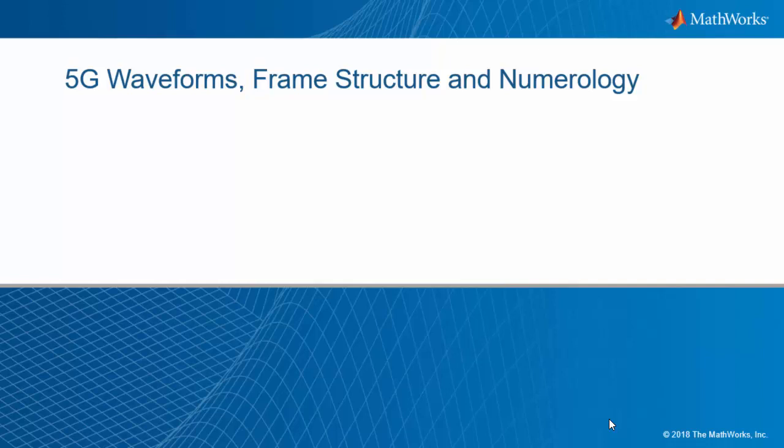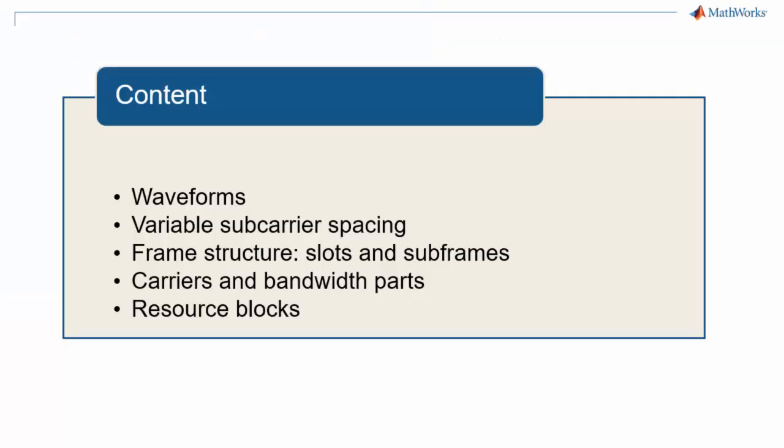This is a new episode of our series 5G Explained. In this video, we discuss the basics of 5G NR waveforms, frame structure, and numerology. We will look at the OFDM waveforms, this really important characteristic of 5G NR to accommodate different subcarrier spacings, and its impact on slots and subframes. We will then explore the concept of carriers and bandwidth parts and see how resource blocks in 5G NR differ from LTE.